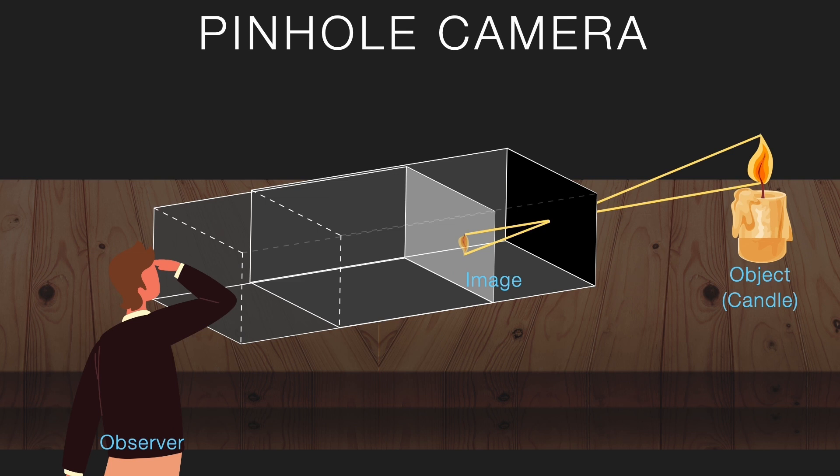You can see here what's happening to the rays of light. So with just a box, a tiny hole, and a screen, you've got yourself a working camera capturing images using nothing but a pinhole and a screen.